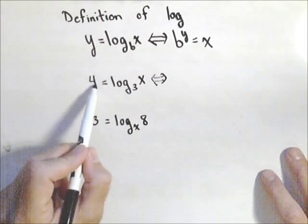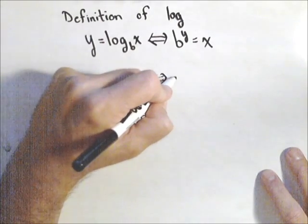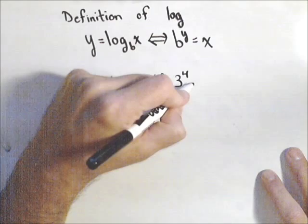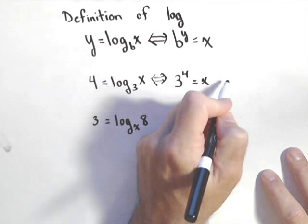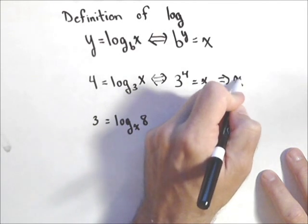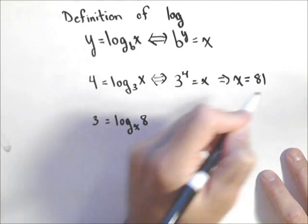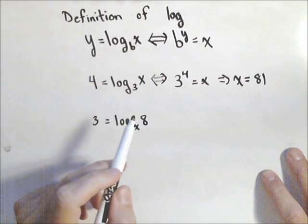So the base to the exponent, so 3 to the 4th equals x. And 3 to the 4th is 81, so we get that x equals 81. So rewriting it as an exponential made it much easier to solve.